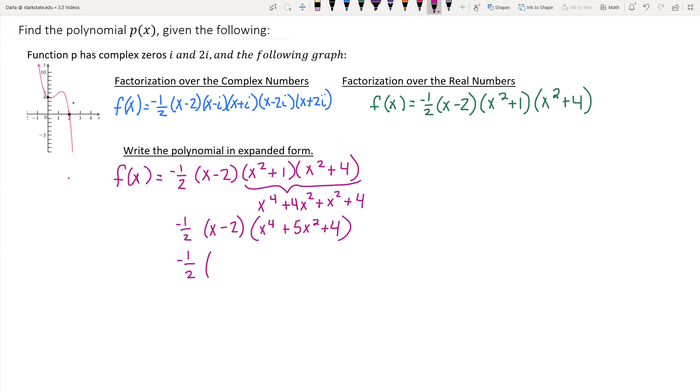And x times x to the fourth is x to the fifth. x times 5x squared is 5x cubed. x times 4 is 4x.